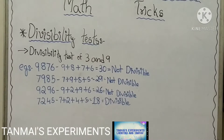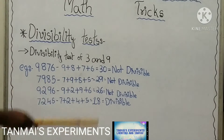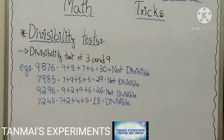Now let's check for 9. The divisibility test of 9 is also the same. From the given number, you have to add all the digits, and if the sum is divisible by 9, then the entire number is divisible by 9. The first example is 9,876: 9 plus 8 plus 7 plus 6 equals 30, and 30 is not divisible by 9, hence 9,876 is not divisible by 9. Similarly, 7,985: 7 plus 9 plus 8 plus 5 equals 29, which is not divisible by 9, hence 7,985 is not divisible by 9.